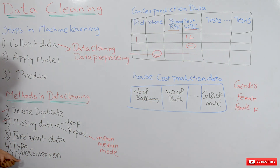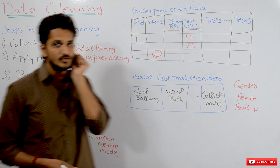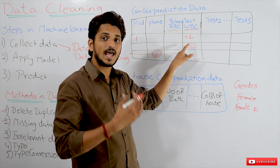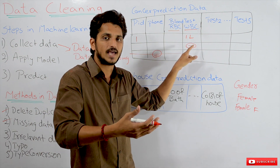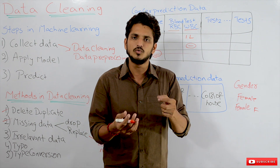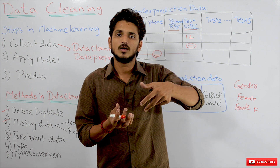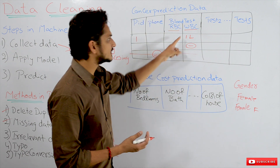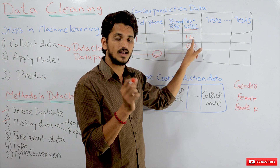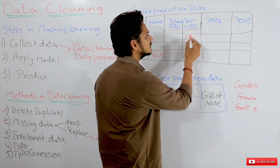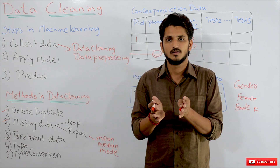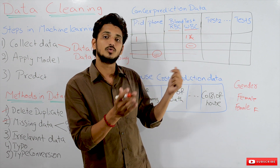The next method is type conversion. What do you mean by type conversion? Take an example: white blood cells count — one lakh, two lakh, five lakhs. These are numeric data. But in the data set, it may be stored as '1L', where L means one lakh. We need to remove the 'L' and make it a numeric value. We have to do type conversion — from string type to numeric values. We have to do that conversion.